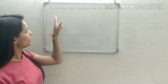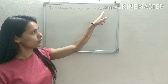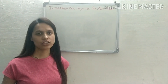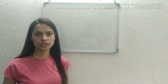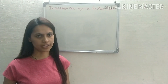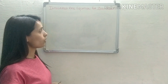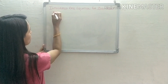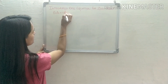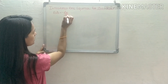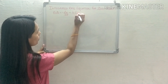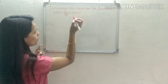Topic: integrated rate equation for zero order. Now we all know what is zero order — a reaction in which the rate of the reaction does not depend upon the concentration of the reactant. So according to the definition, rate equals minus dx/dt equals k into [X]^0.